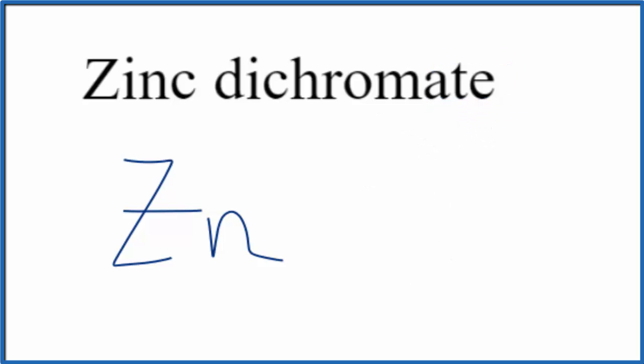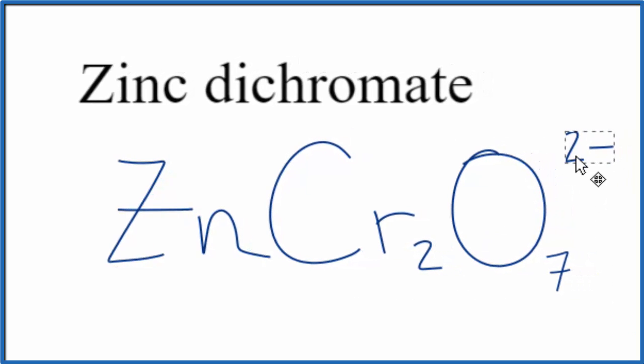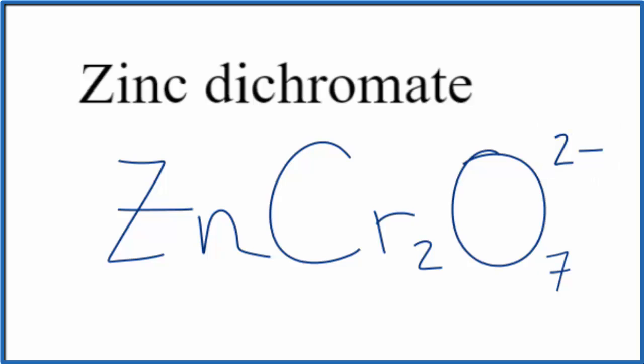So you either memorize that the dichromate ion is Cr2O7 and it has a 2- ionic charge, or if you're allowed, you could look this up on a table of polyatomic ions.